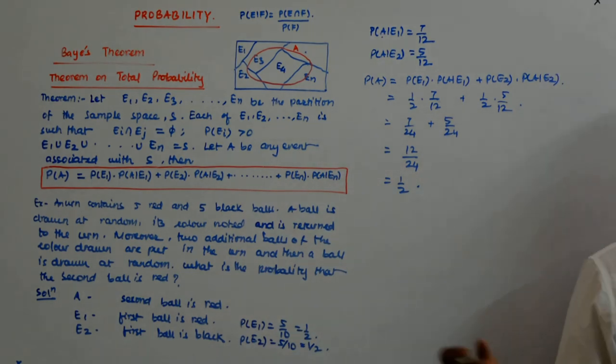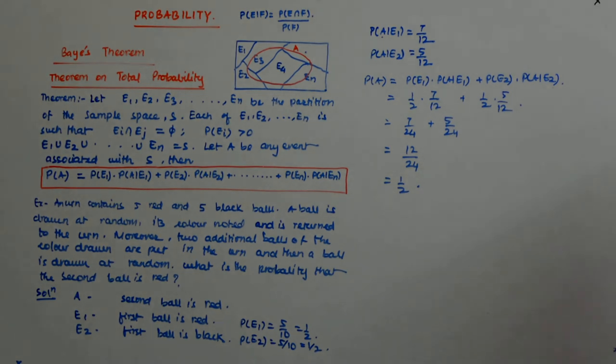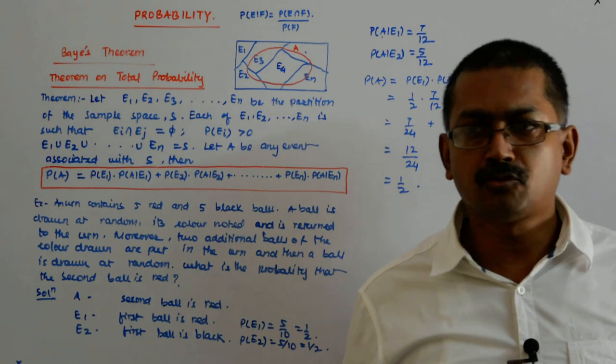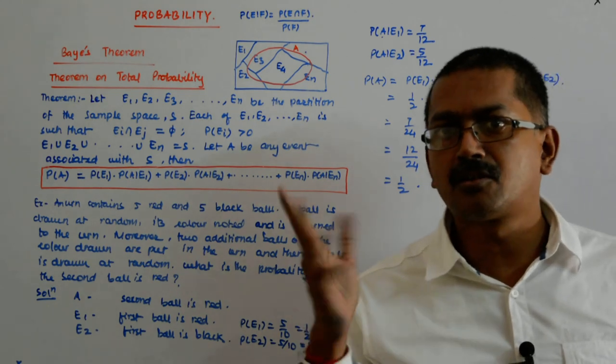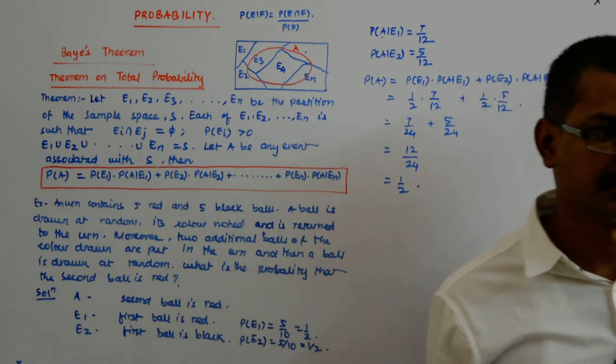You see, many a times these problems get solved like this. 5 black balls, if you pick one black ball out, E2 is picking first ball as black. So when you pick out a black ball, you put 2 black balls and you have 7 black balls and 5 red balls. But A is what? Drawing the second ball as red, not drawing the second ball as black. So 5 out of 12, 5 by 12, correct? Perfect.